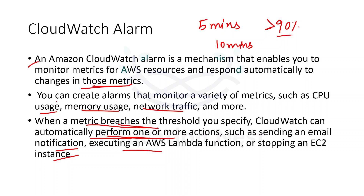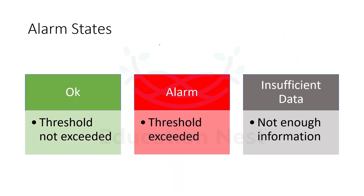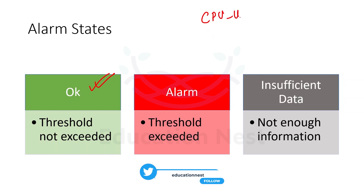You can decide and configure this on the portal. There are three different alarm states: OK, Alarm, and Insufficient Data. OK means everything is fine — your threshold is not being exceeded yet. Suppose I created one metric for CPU utilization and kept the threshold at 50%. If CPU utilization is going beyond 50%, I want to get notified.